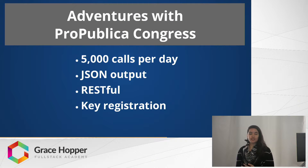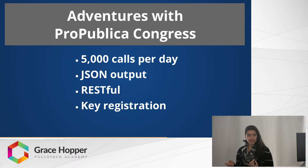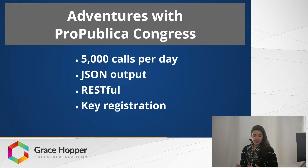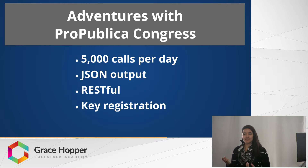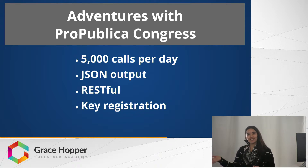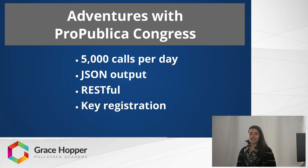Now I'm going to talk about my specific experience using the ProPublica Congress API. I had a 5,000 call per day limit and I got my output in JSON format. I did have to register for a key by emailing the address they provided, and then they just sent me a key back — it was pretty simple. I don't think I had to say anything, but I did explain to them what I wanted to do.